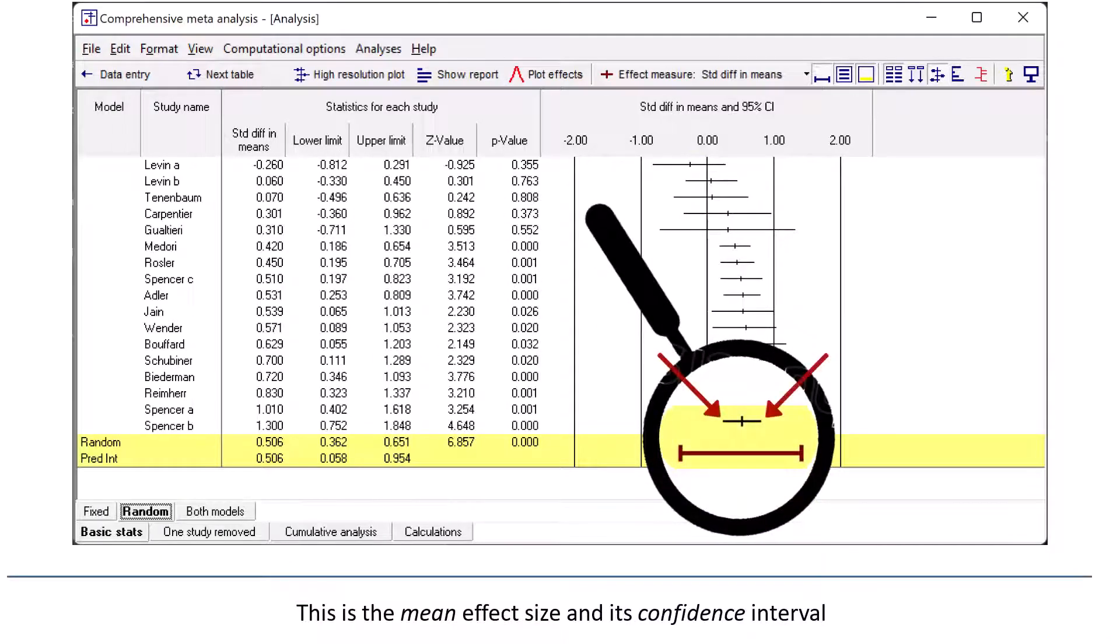This is the mean effect size, and its confidence interval. This is the prediction interval. The confidence interval is an index of precision. It tells me that the true mean probably falls between here and here. By contrast, the prediction interval is an index of dispersion. It tells me that in any single study, the true effect size will usually fall between here and here.